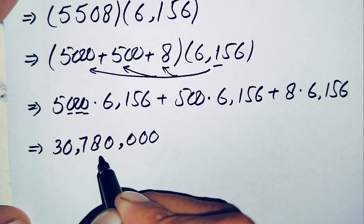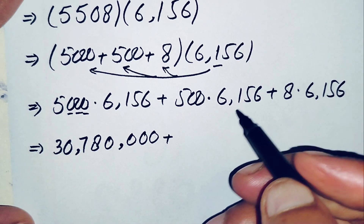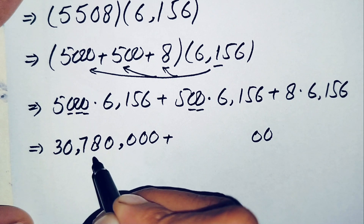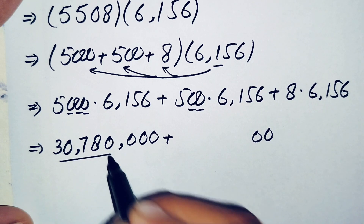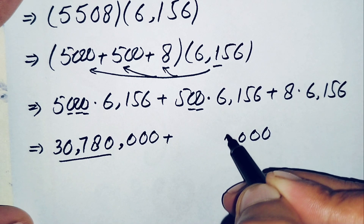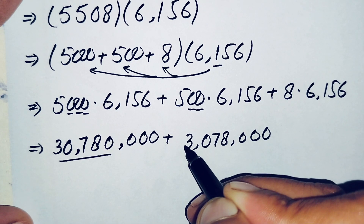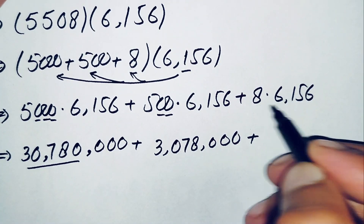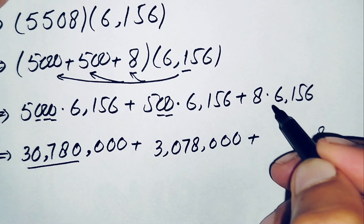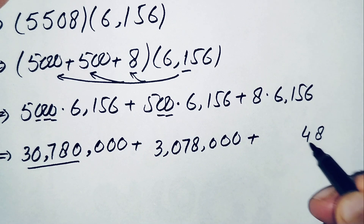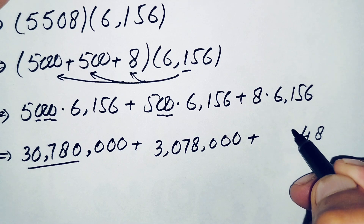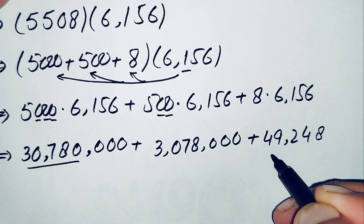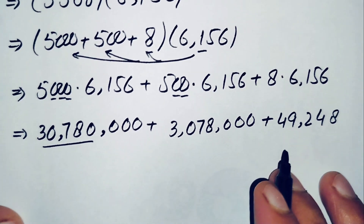Next, 500 times 6156 equals 3,078,000. Then 8 times 6156: 8 times 6 is 48, carry 4; 8 times 5 is 40 plus 4 is 44, carry 4; 8 times 1 is 8 plus 4 is 12, carry 1; 8 times 6 is 48 plus 1 is 49. So 8 times 6156 equals 49,248.